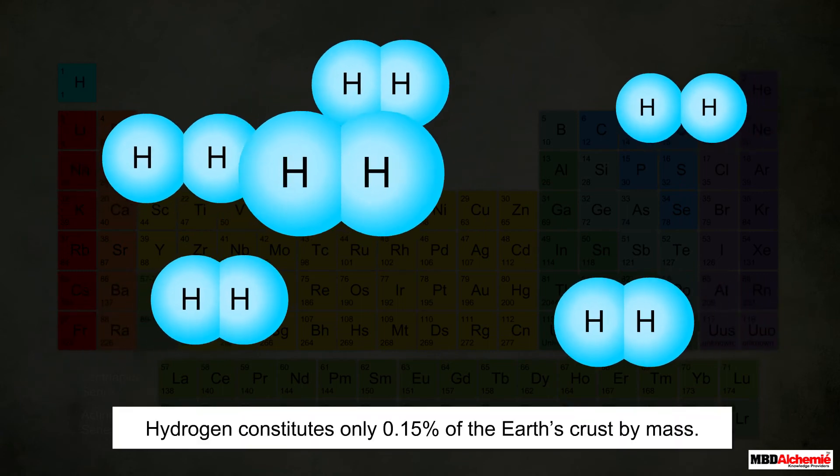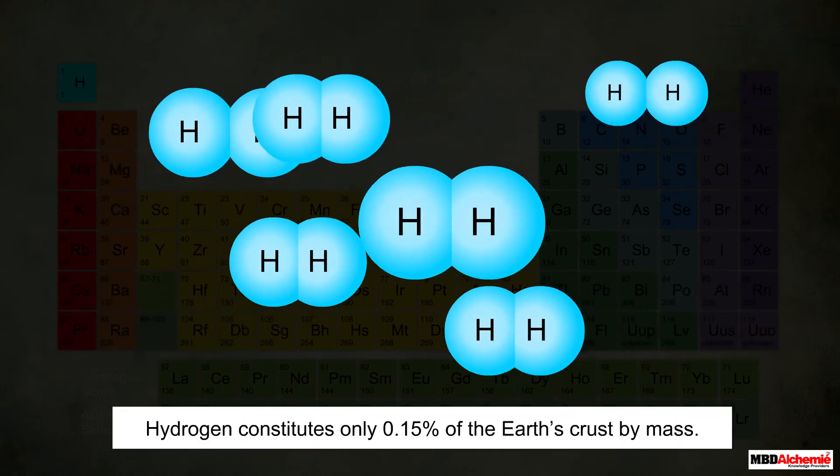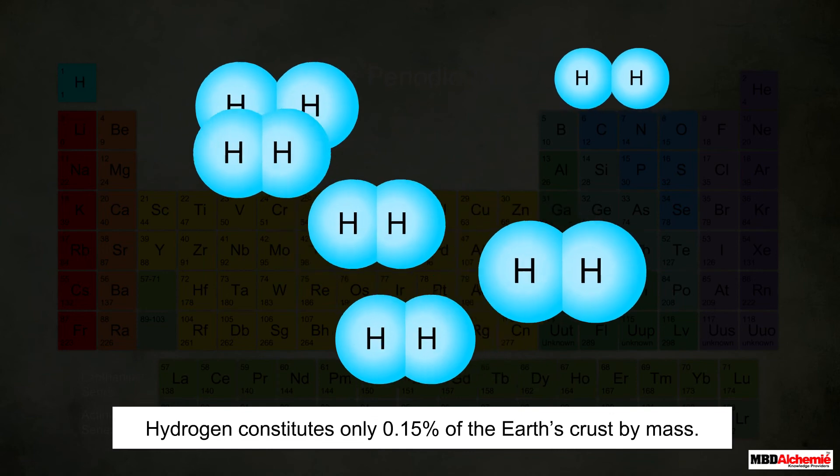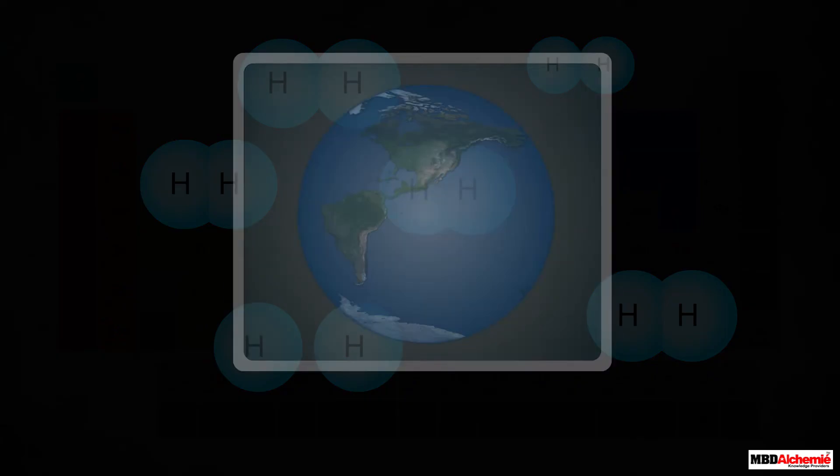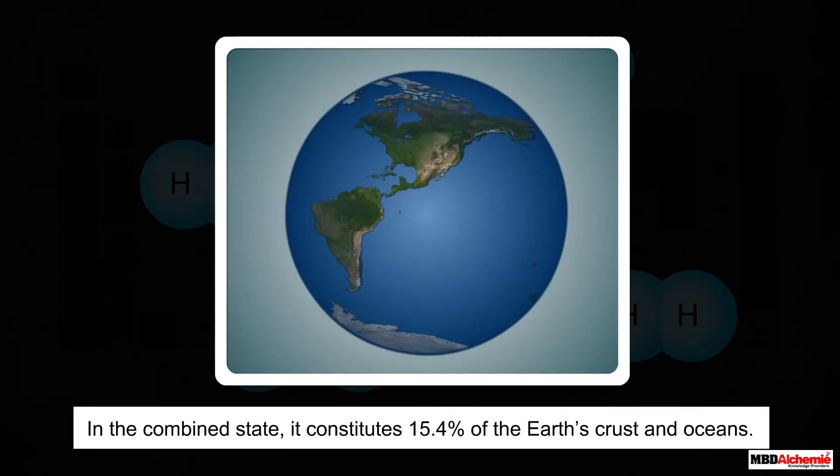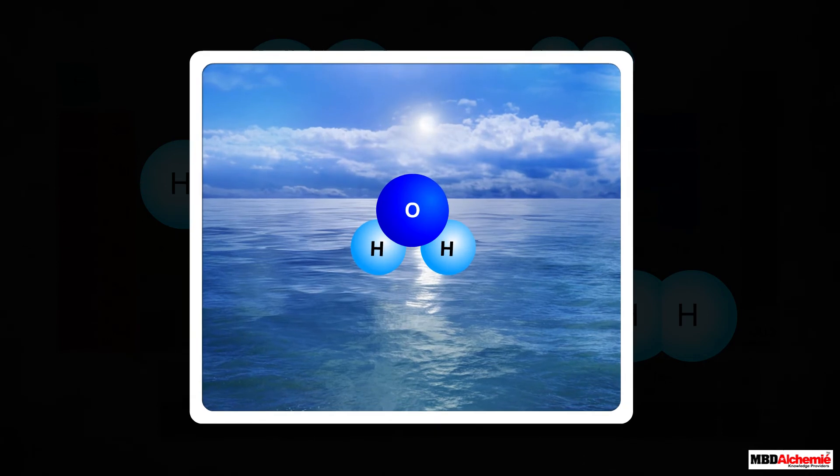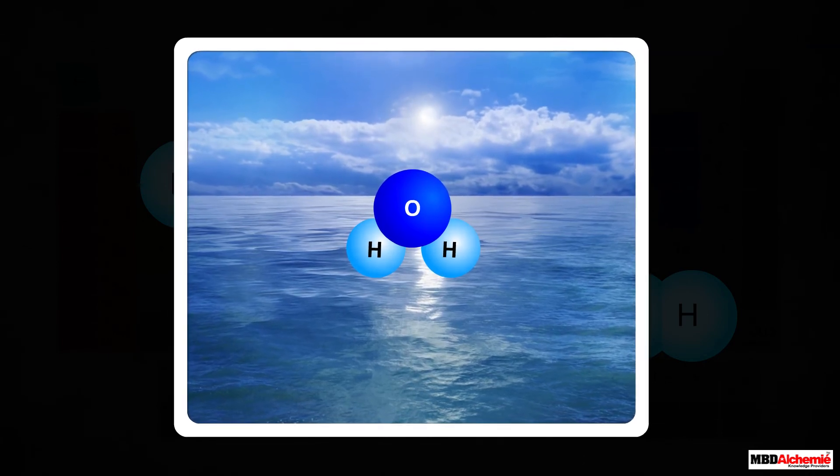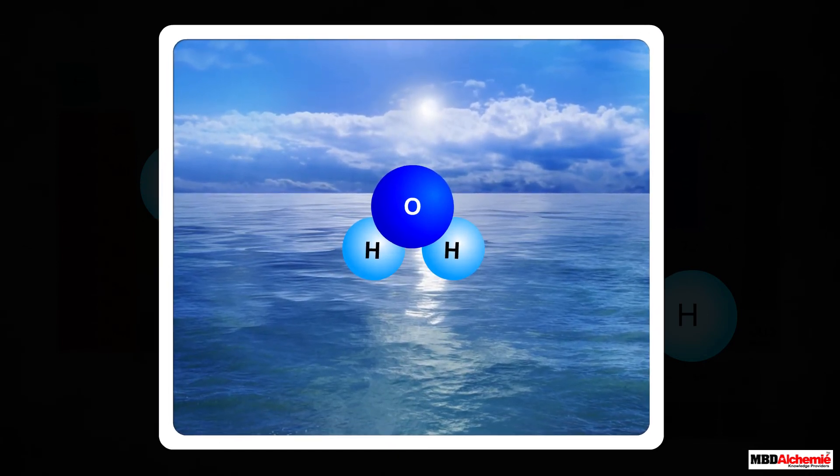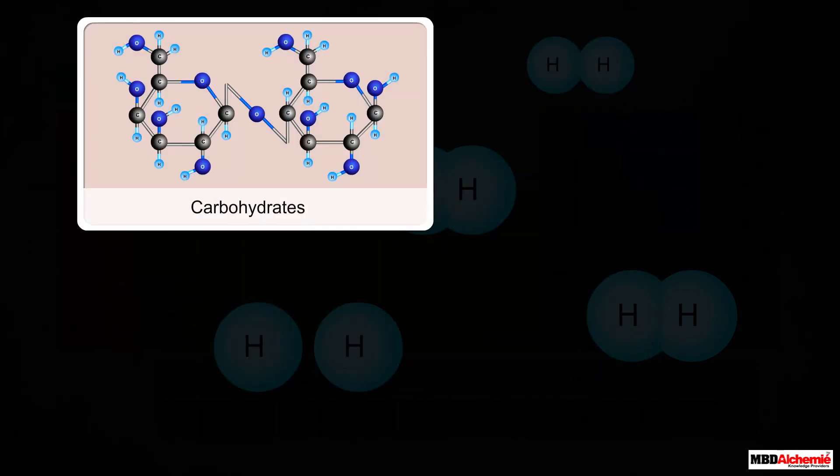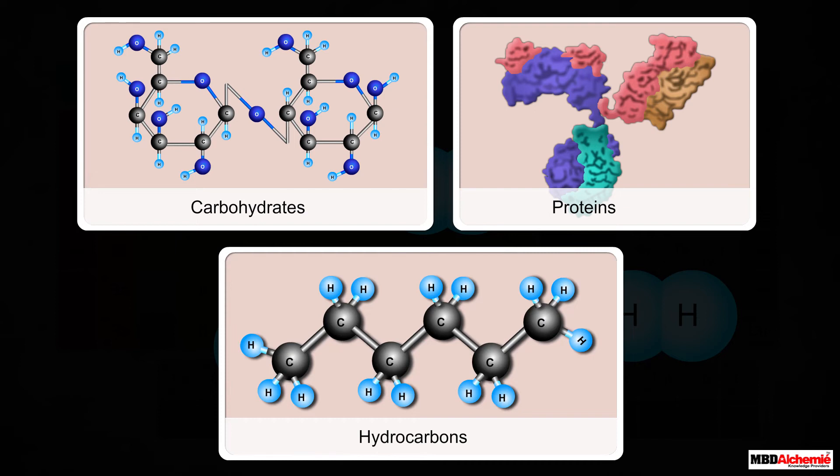However, in the combined state, it constitutes 15.4% of the earth's crust and oceans. In its combined state, hydrogen is mainly present as water. Other than water, hydrogen is also present as carbohydrates, proteins, hydrocarbons, and many other compounds.